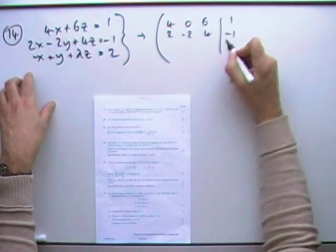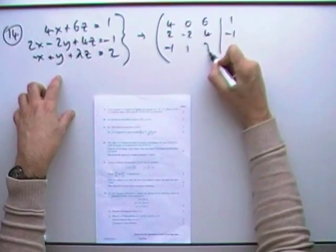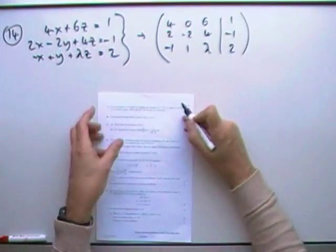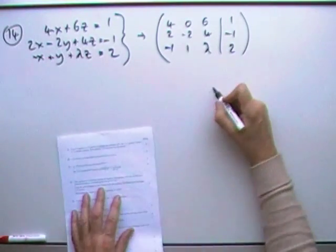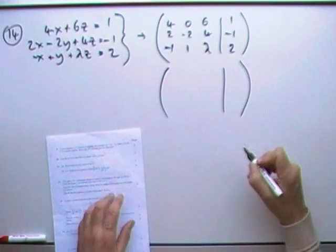2, -2, 4, -1, -1, 1, λ, 2. So I may well make a mistake here. It's just so much to do.